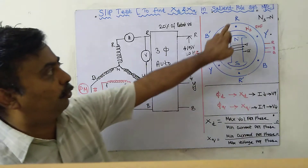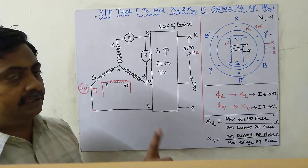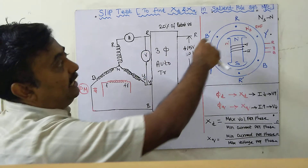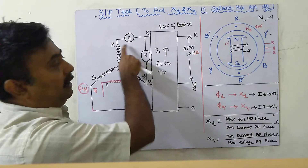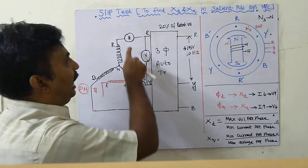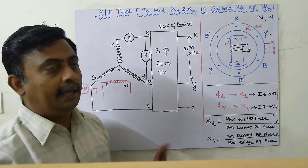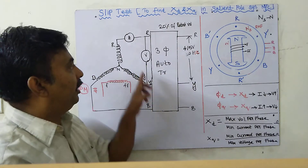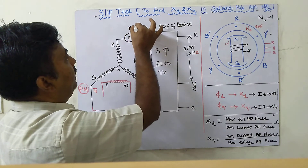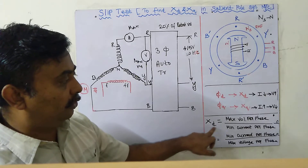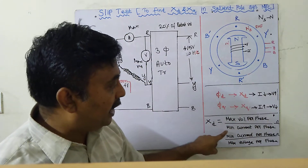Whenever the rotating magnetic field crosses the rotor, the voltmeter oscillates from maximum to minimum and the ammeter also oscillates. When the rotating magnetic field crosses the direct axis, the voltage is maximum and current is minimum. When it crosses the quadrature axis, the current is maximum and voltage is minimum. We must note down the maximum voltage, minimum voltage, maximum current, and minimum current. The formula for Xd is: Xd = maximum voltage per phase divided by minimum current per phase.